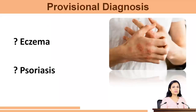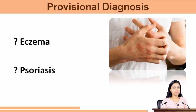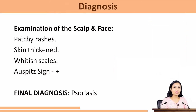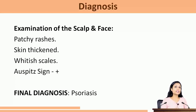Out of the symptoms that we have taken, what do you think is the diagnosis? We come up with two kinds of diagnosis that this patient could possibly be suffering from. The first is a form of eczema and the second is psoriasis. How did we finally arrive at the diagnosis?